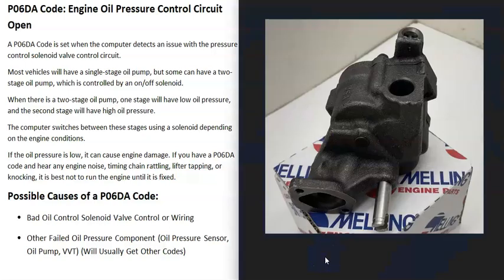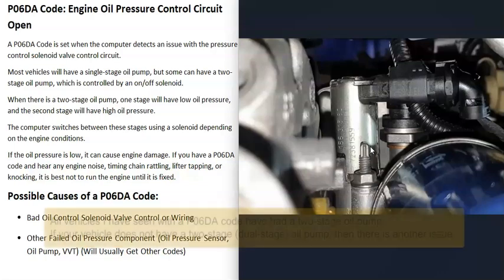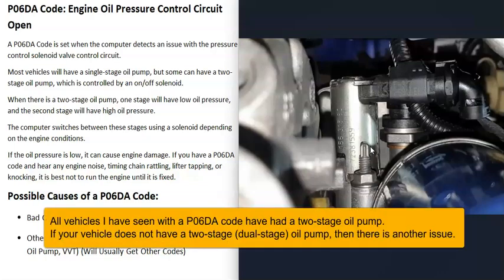Basically, an engine can have a single stage oil pump, which is very common. But many newer vehicles have what's called a two stage oil pump, and when a vehicle has a two stage oil pump, it's going to be controlled by a solenoid. The computer can control the oil pressure with a solenoid, and this solenoid is called an oil control solenoid valve. The computer uses it to control the oil pressure. When you get this P060A code, the computer is seeing a problem with either the solenoid or the wiring going to it, and it's got to be troubleshot to know why.